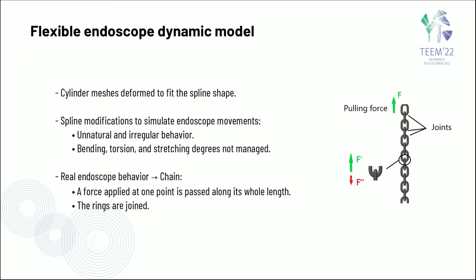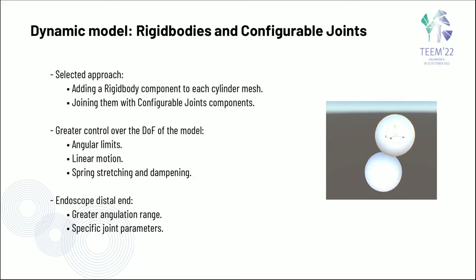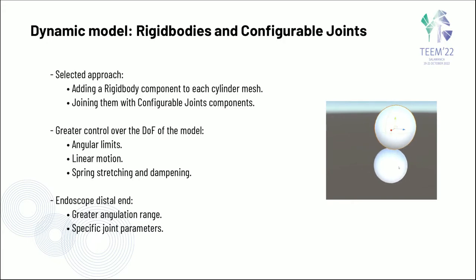Experiencing the behavior of a real endoscope arose the idea that it behaved like a chain, where the force applied at one point is passed along the jointed rings. From this idea sourced a new approach: adding rigid body components to each cylinder and joining them with configurable joint components. These joints keep the cylinders together while providing great control over forces and boundaries for the degrees of freedom of the model, including angular limits, linear motion limits, and spring behavior.